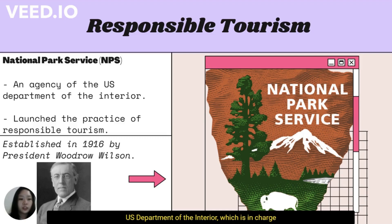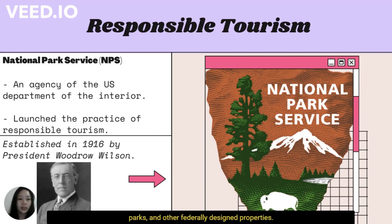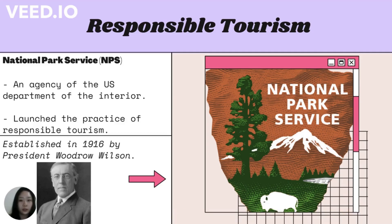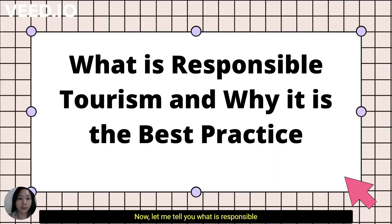For your information, NPS is an agency of the U.S. Department of the Interior, which is in charge of maintaining and managing several hundred historical sites, national parks, and other federally designated properties. The agency was established in 1916 by President Woodrow Wilson and signed into law, stipulated to conserve the history, scenery, and natural objects and to leave them undamaged for future generations to enjoy.